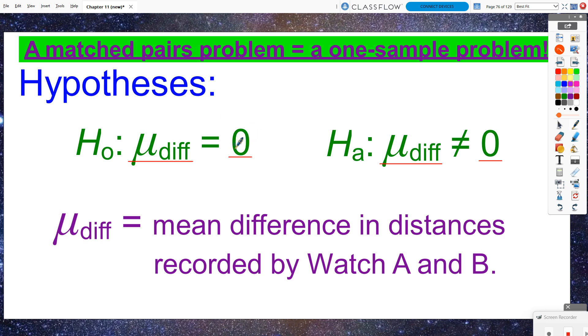If they were exactly the same, then I would expect to see a zero difference between them. Versus alternatively, we don't know which watch is going to be better at keeping distances than the other, so we are going to make this a two-sided test. We're going to say not equal to zero. We need to define our parameter that μ_diff is the mean difference in distances recorded by watches A and B.